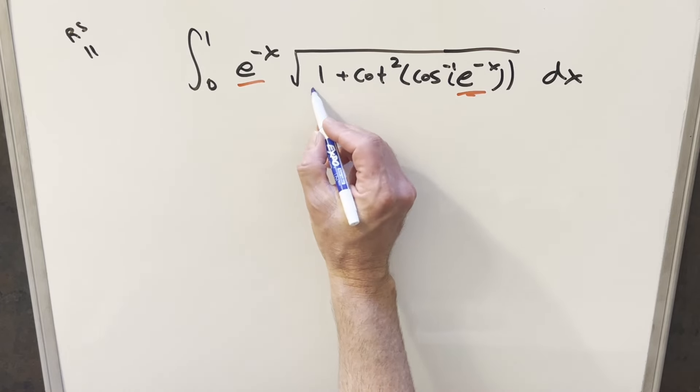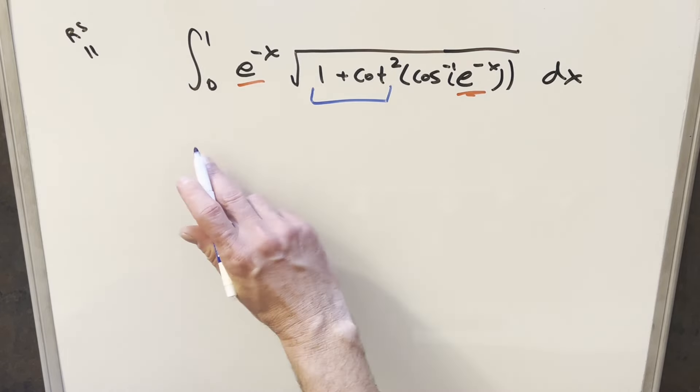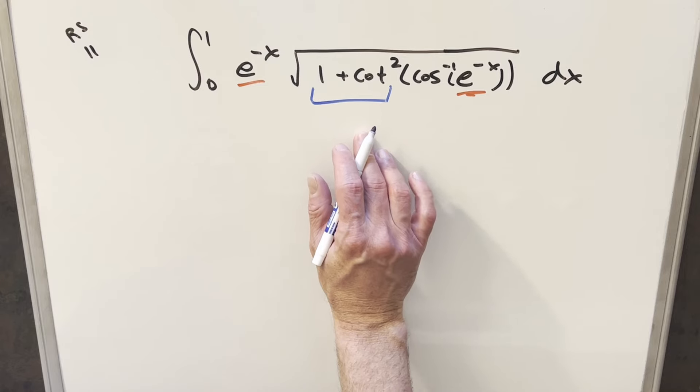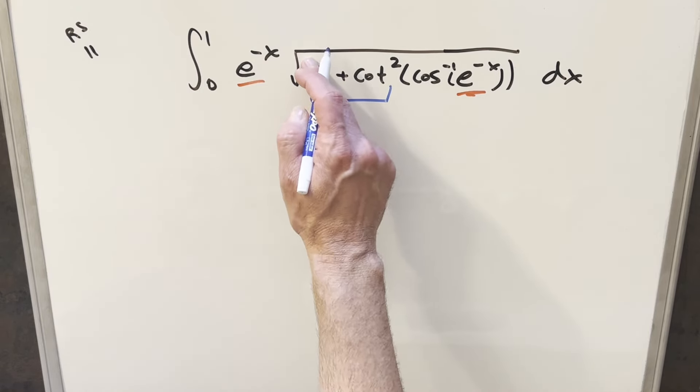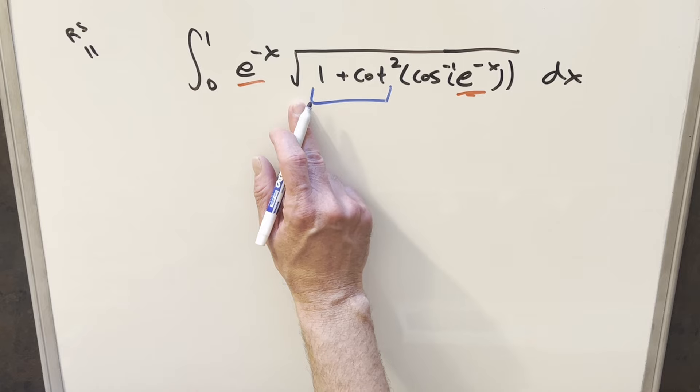And then also I noticed this 1 plus cotangent squared right here, which is a lot like 1 plus tangent squared. That makes me think we could use a trig identity inside the radical that could give us a lot of simplification right there.